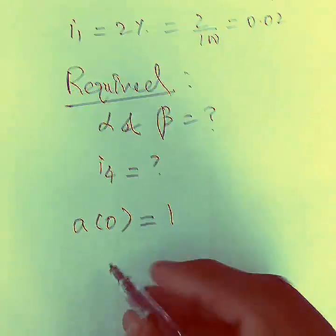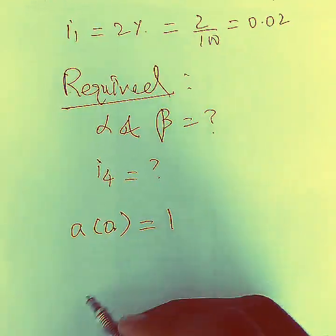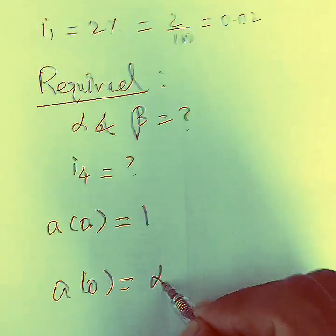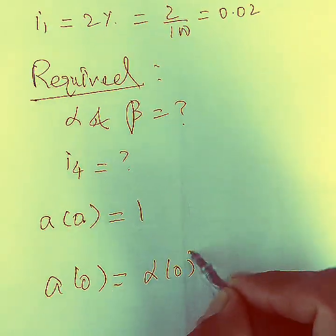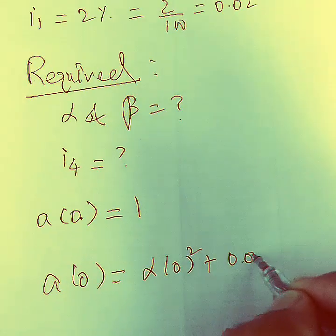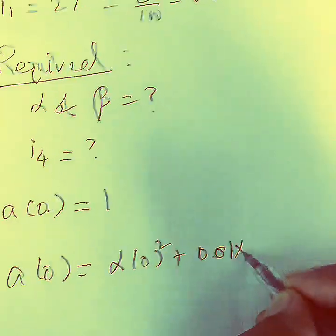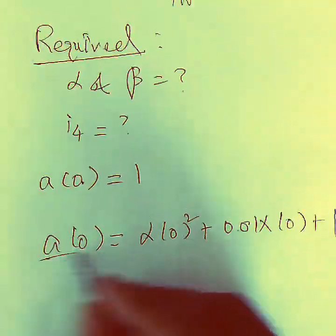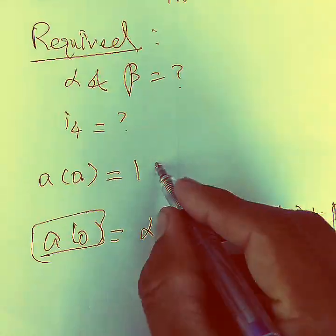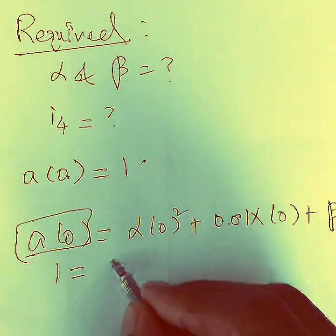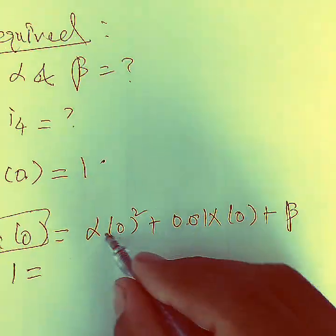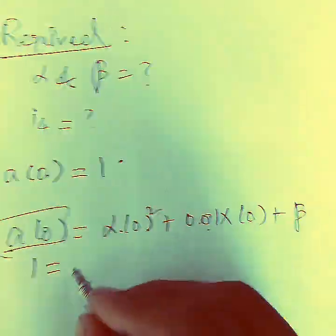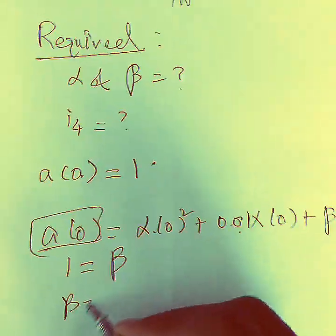Using the property a(0) = 1, we plug in t = 0: a(0) = α·0² + 0.01·0 + β = β = 1. So β = 1.